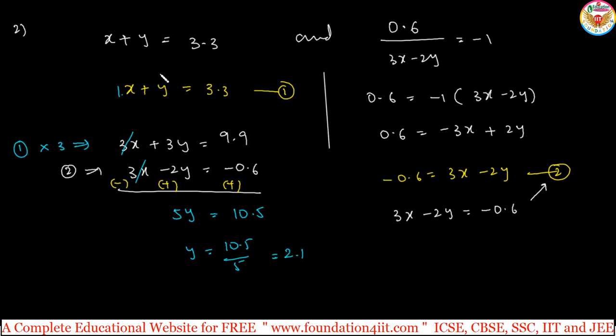Y value is substituted in equation 1. So from first equation: x plus y is 2.1 is equal to 3.3. From this, x is 3.3 minus 2.1. So x value is 1.2. X is equal to 1.2 and y is 2.1.